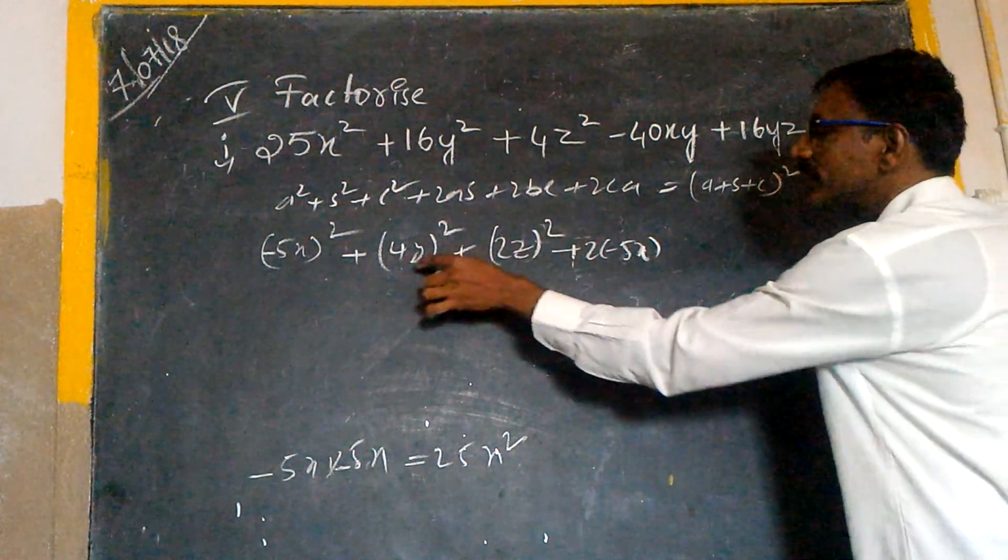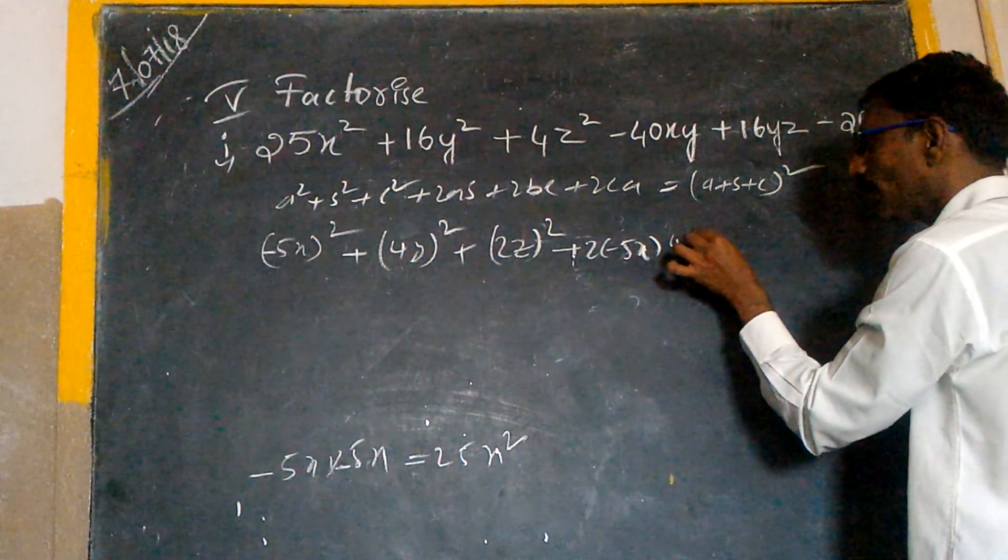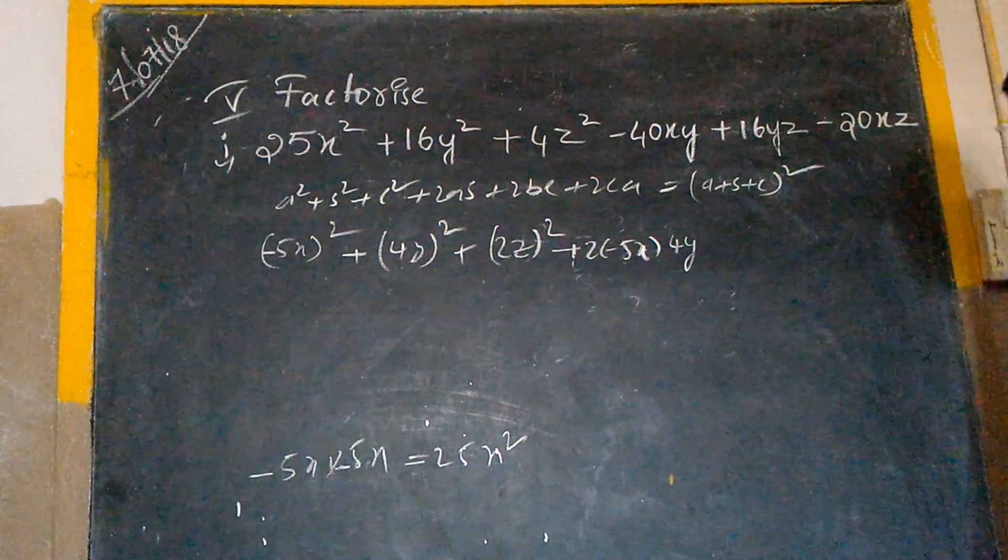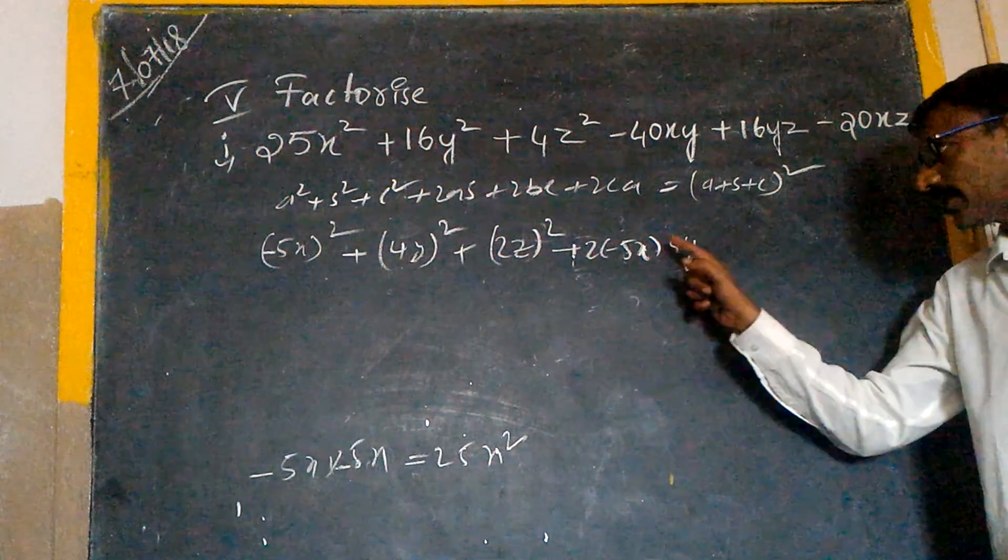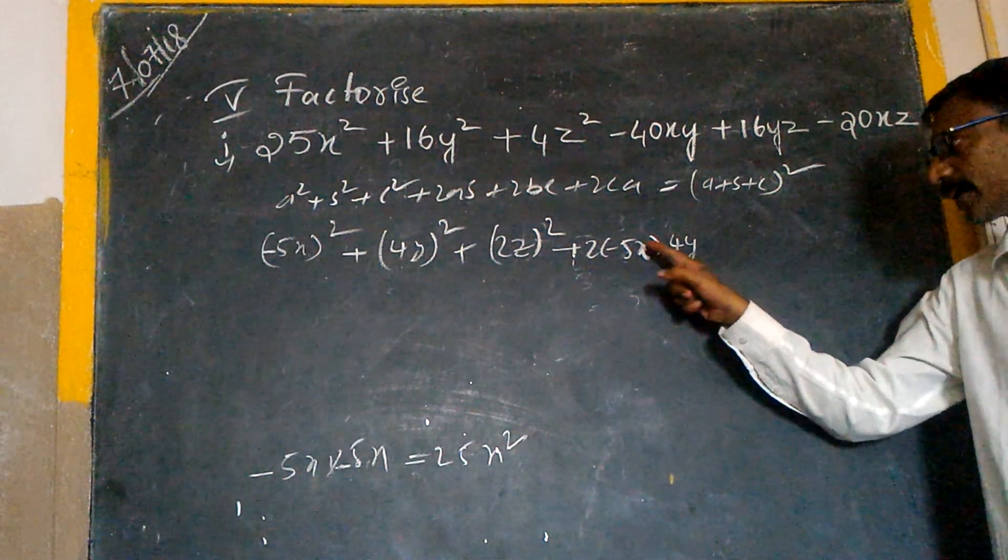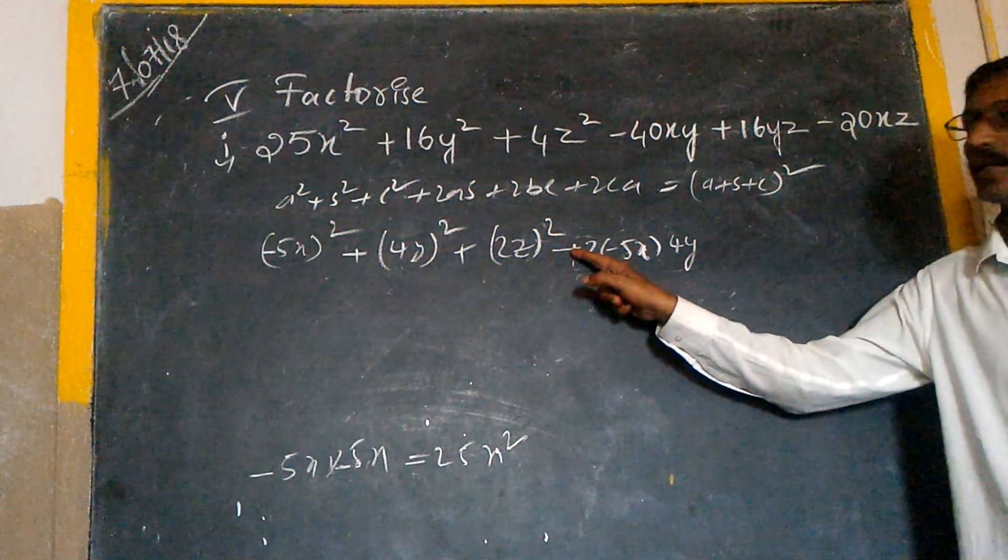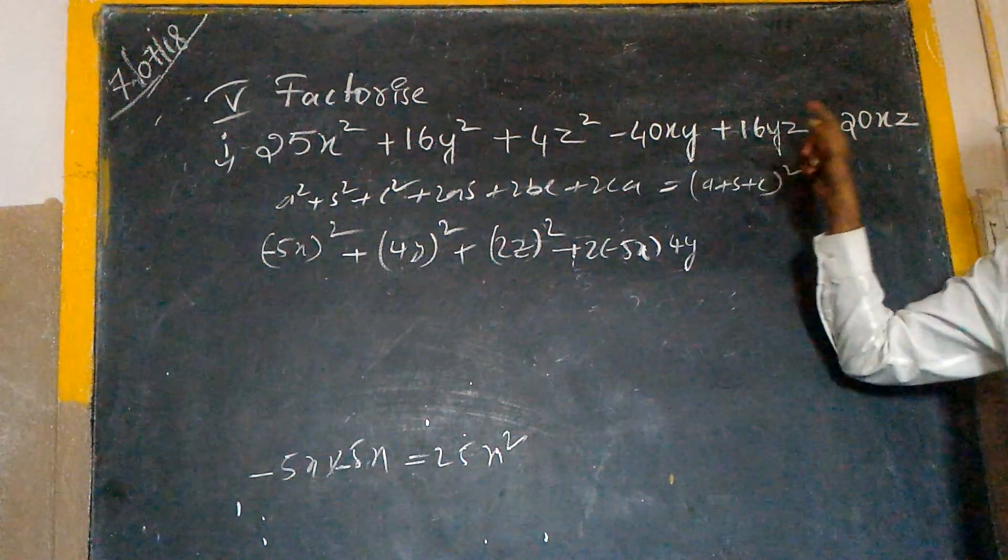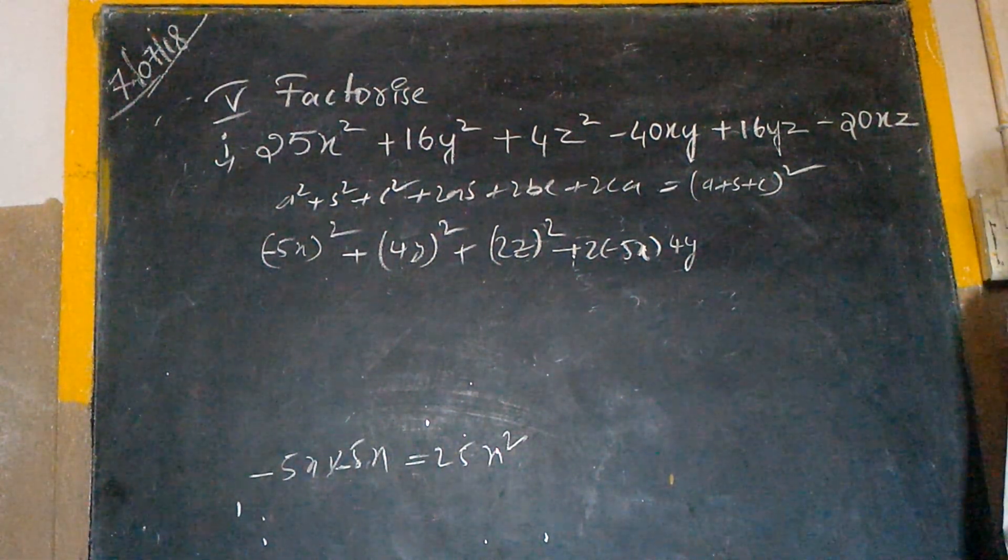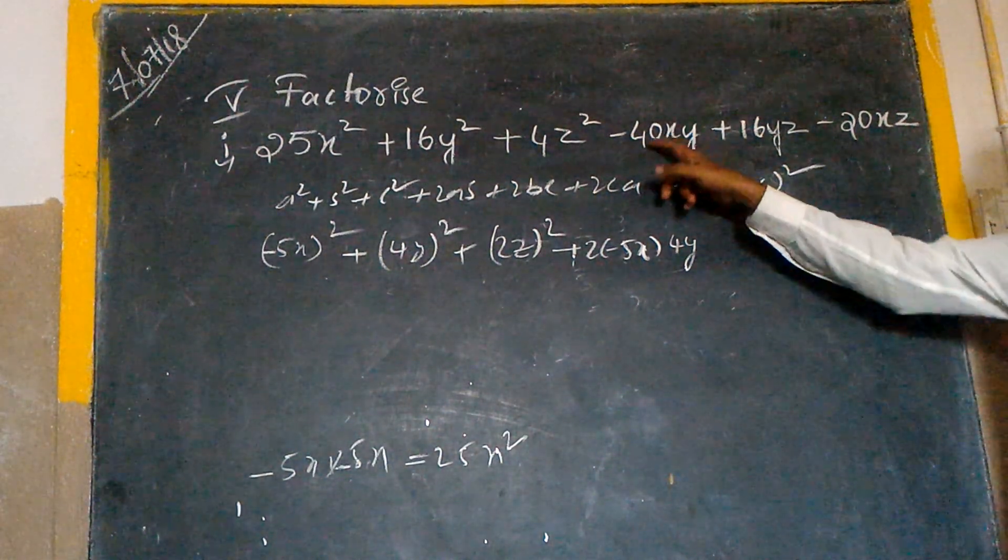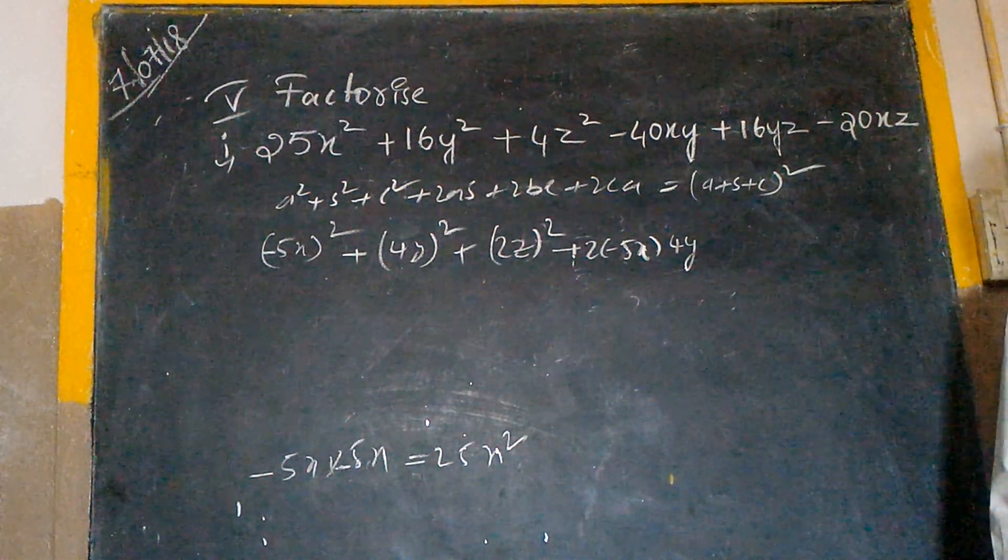And b value is 4y. 2 fours are 8, 8 fives are 40. Plus into minus is minus, minus 40xy. Do you understand why we take x is negative? Here and here we have x is negative.